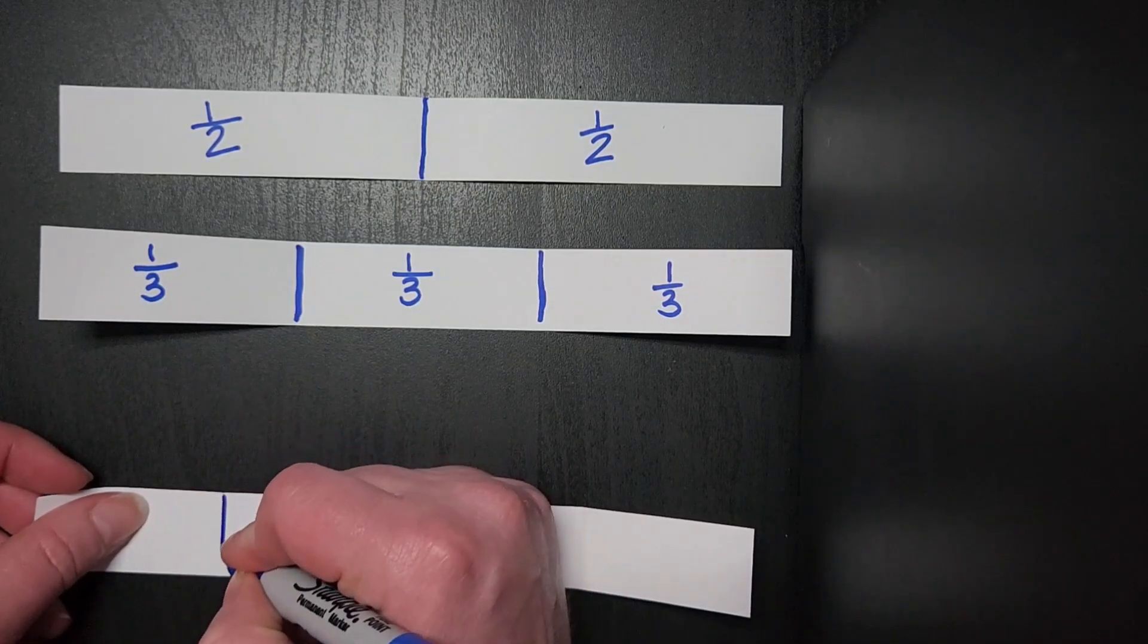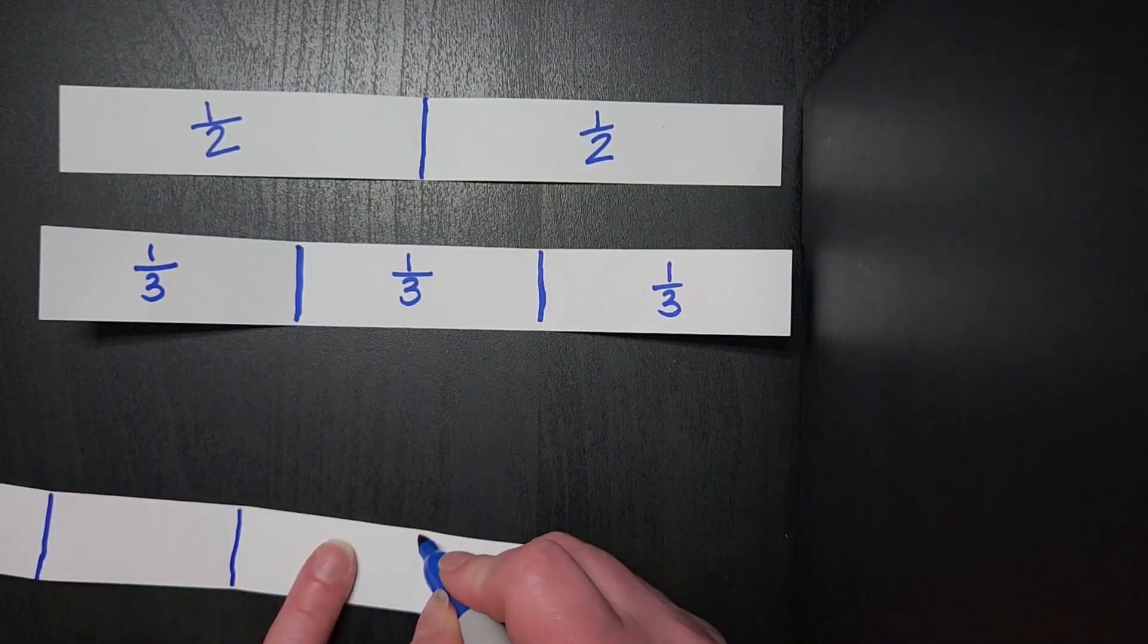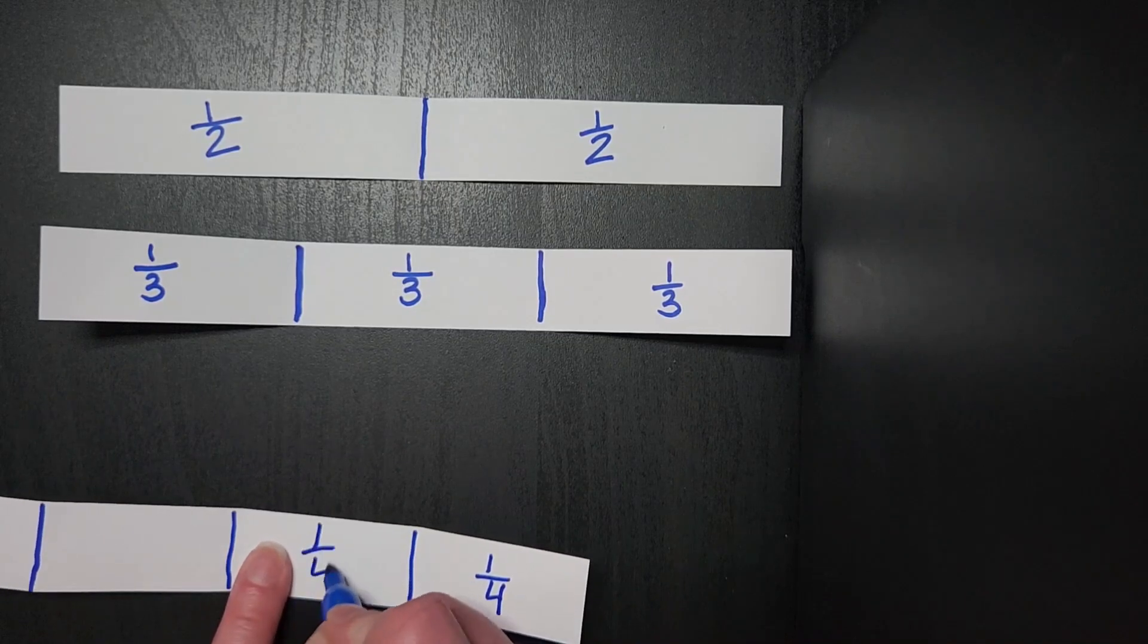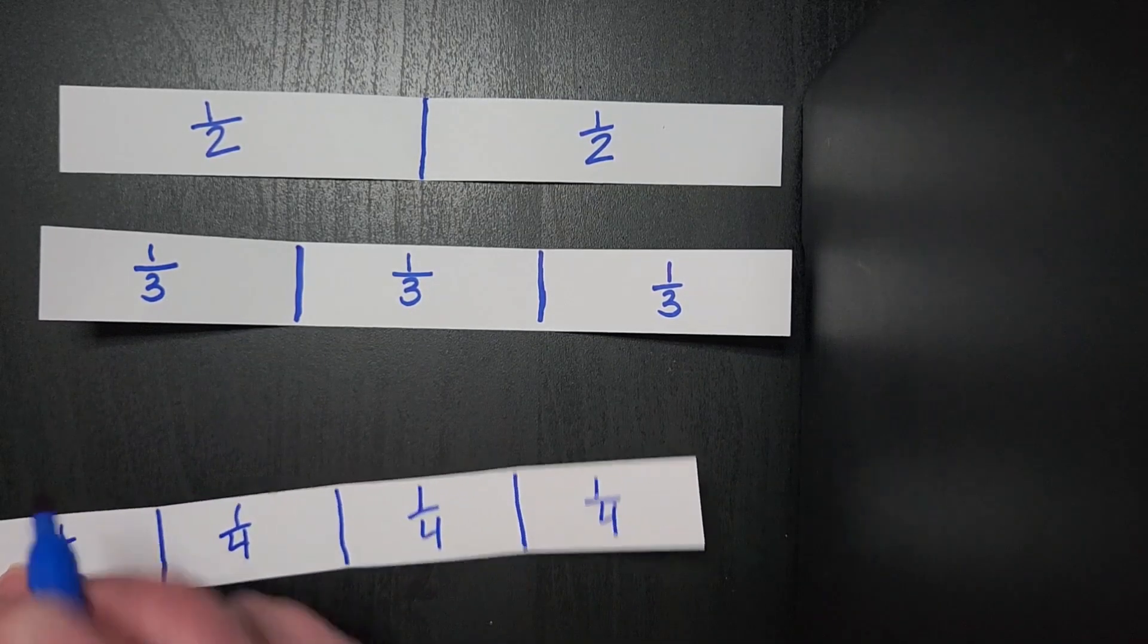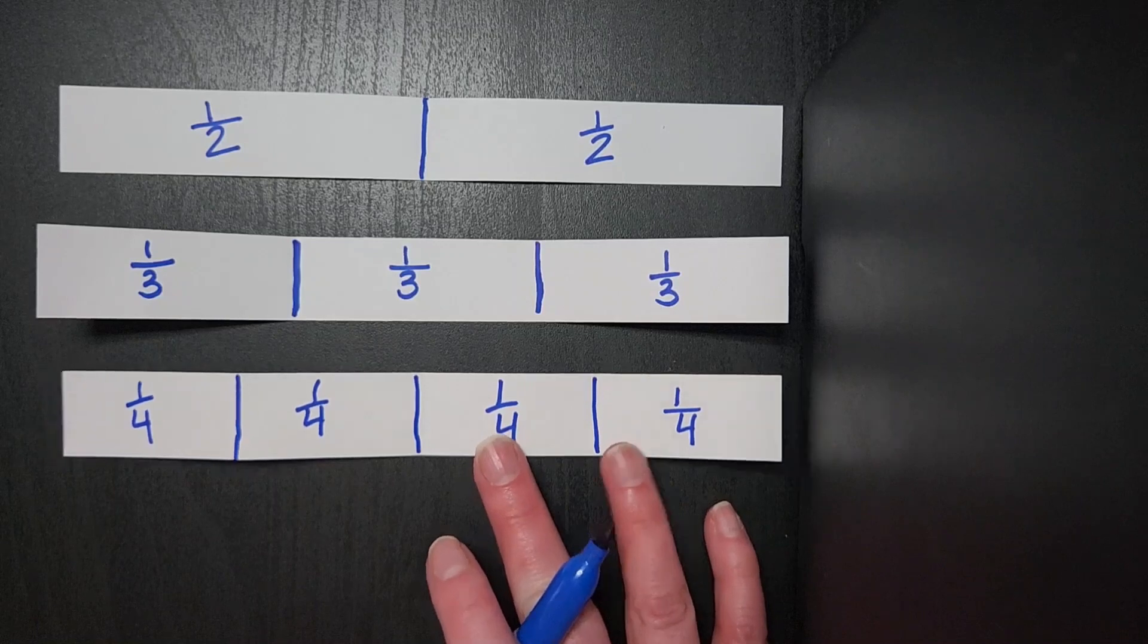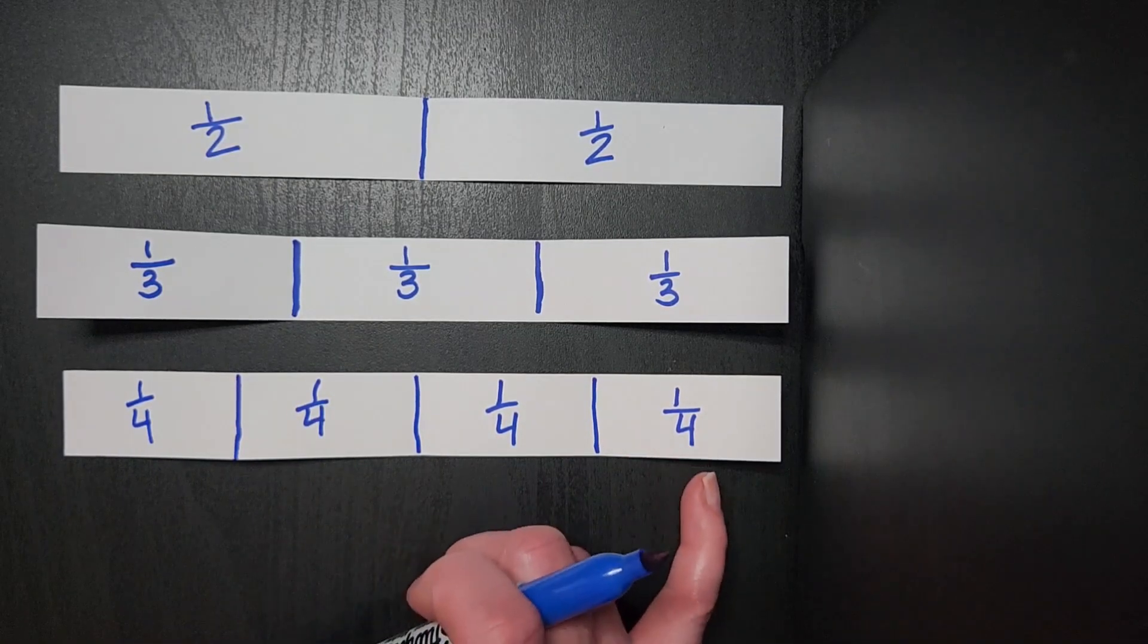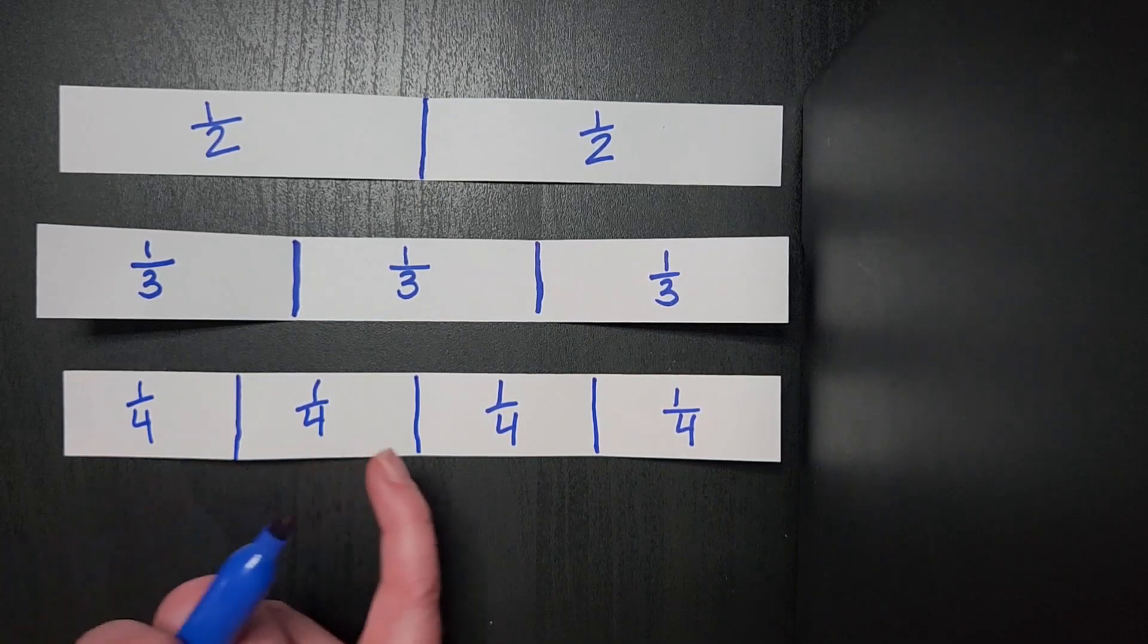So we label them, and we label them with those fractions. And then after they are glued down, it's at this time that I ask kids to talk to me about what they recognize about the denominators. So we talk about how the denominators get bigger as we're going on. So we talk about how the bigger the denominator, the more pieces we cut the whole into.